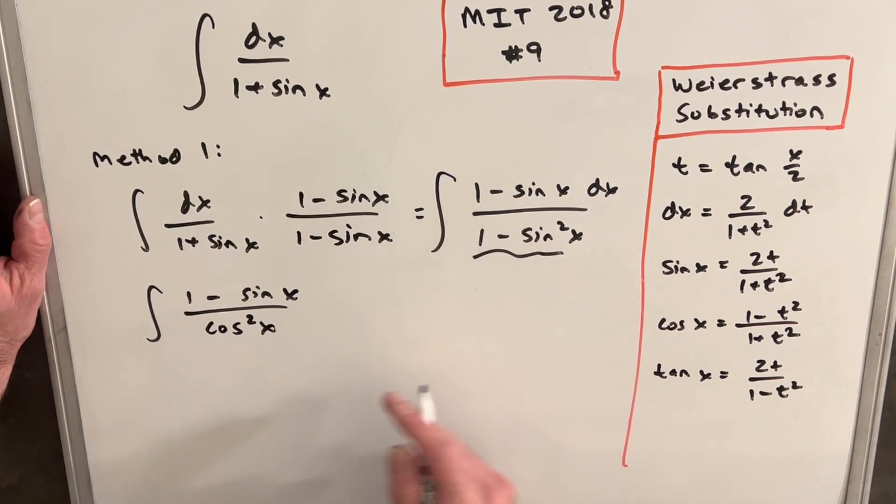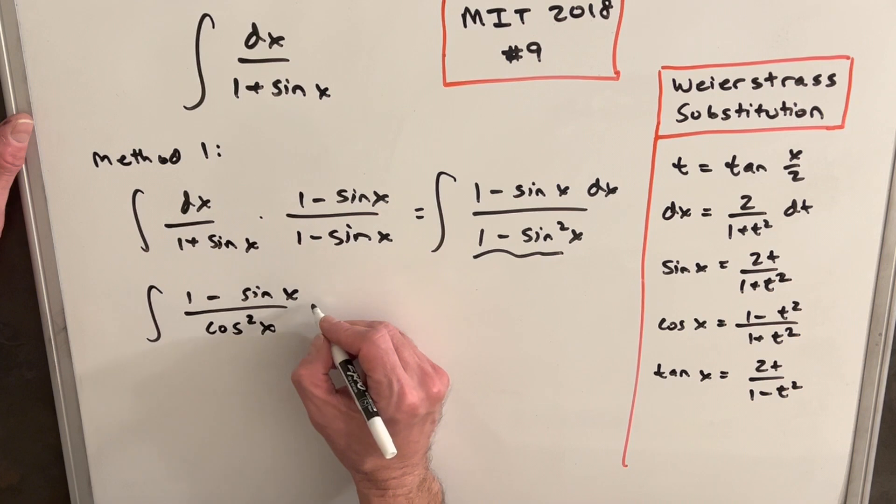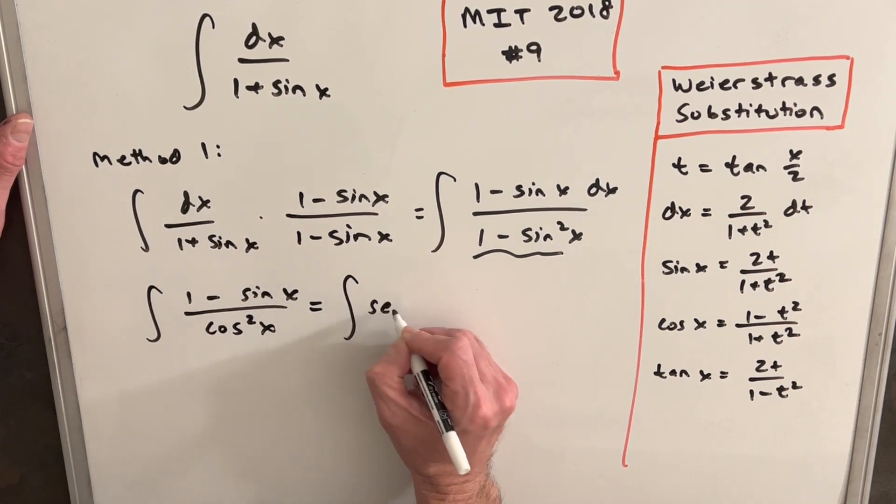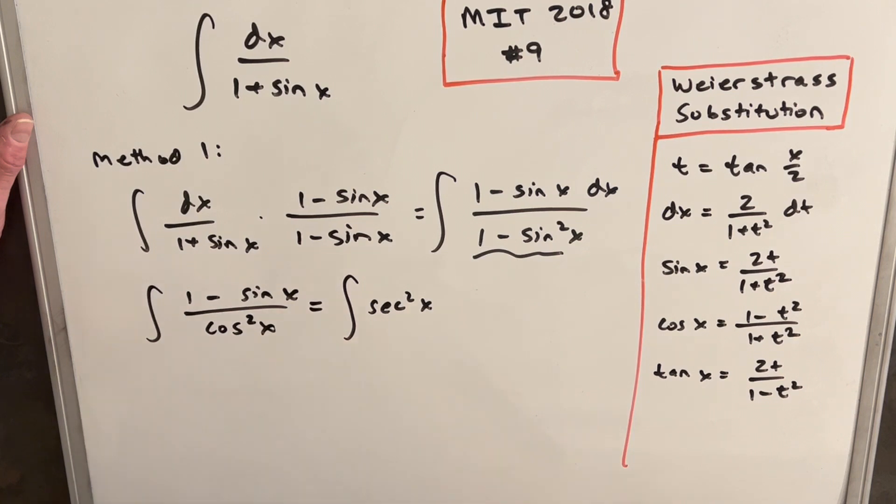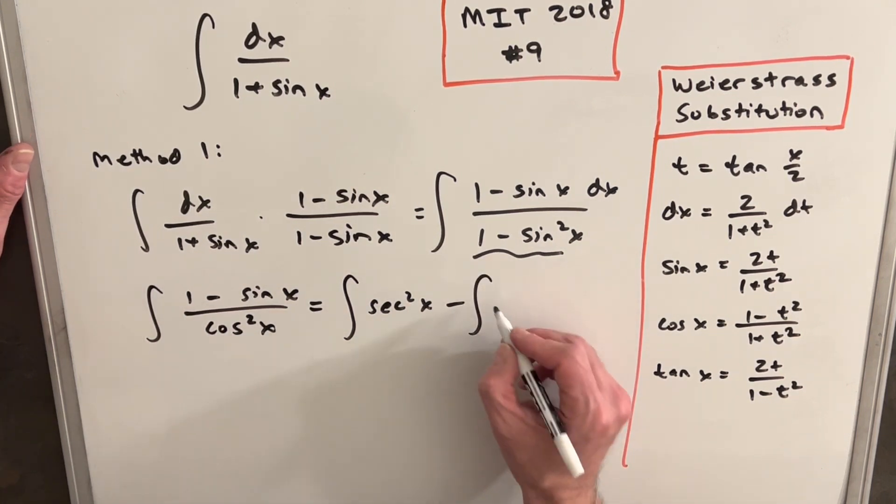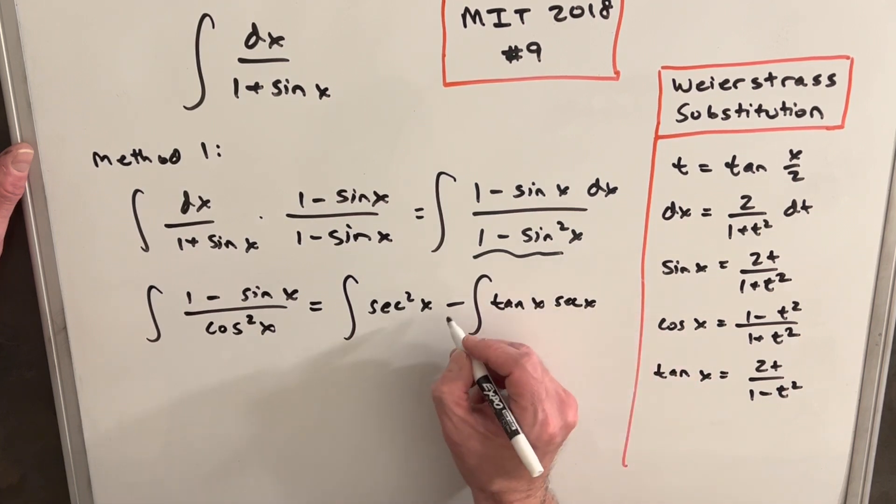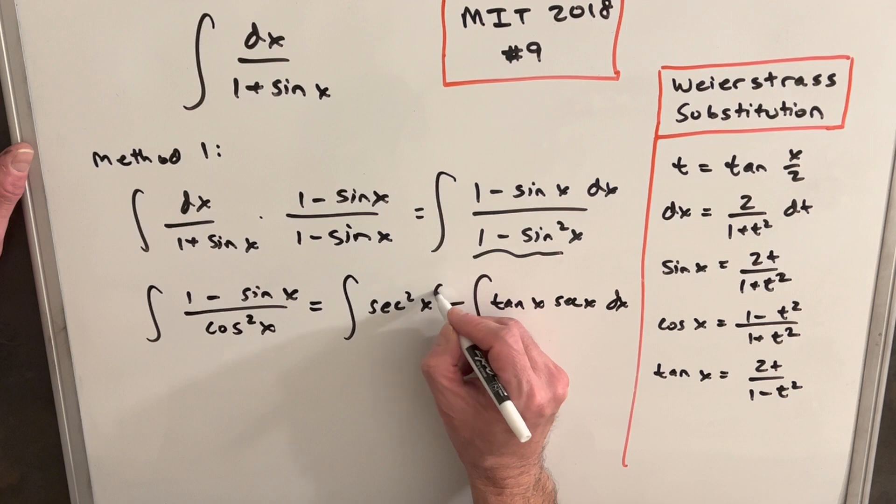But then we notice this here is just cosine squared. So we can rewrite it like this. And then we can break this into two integrals. One is going to be secant squared x, and the other one's going to be tan x secant x. And don't forget your dx.